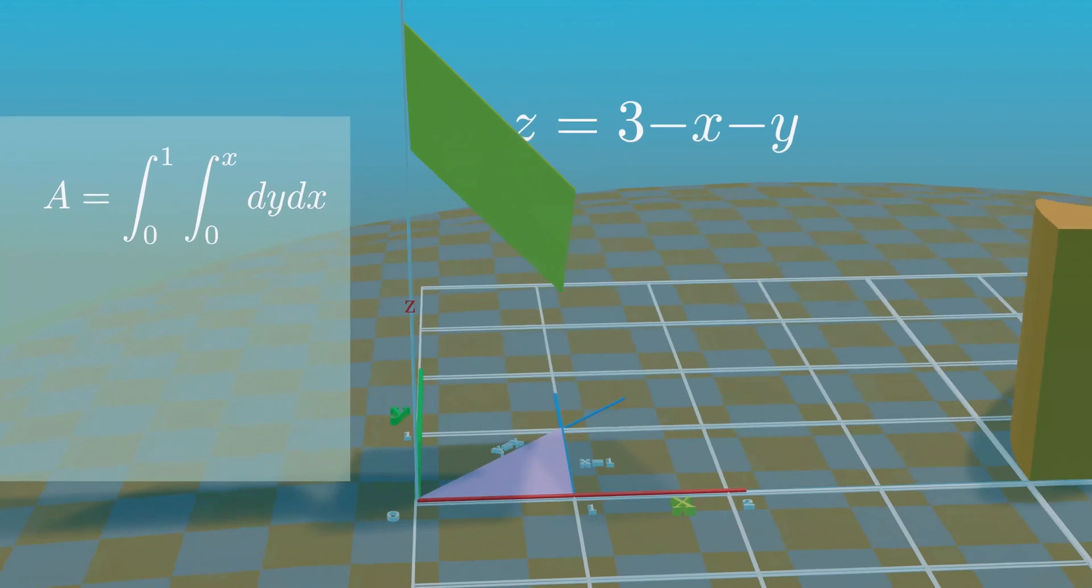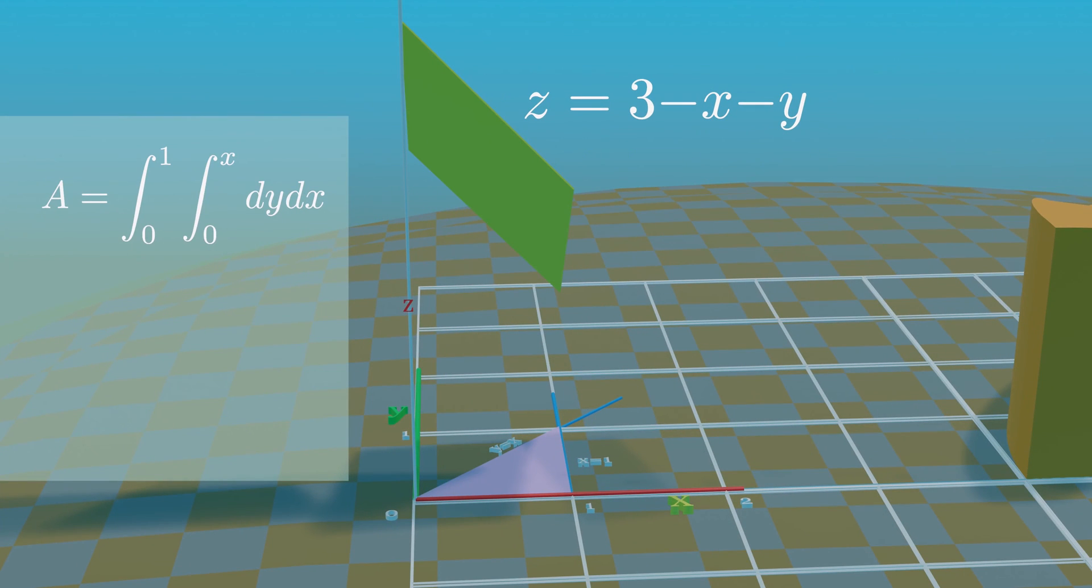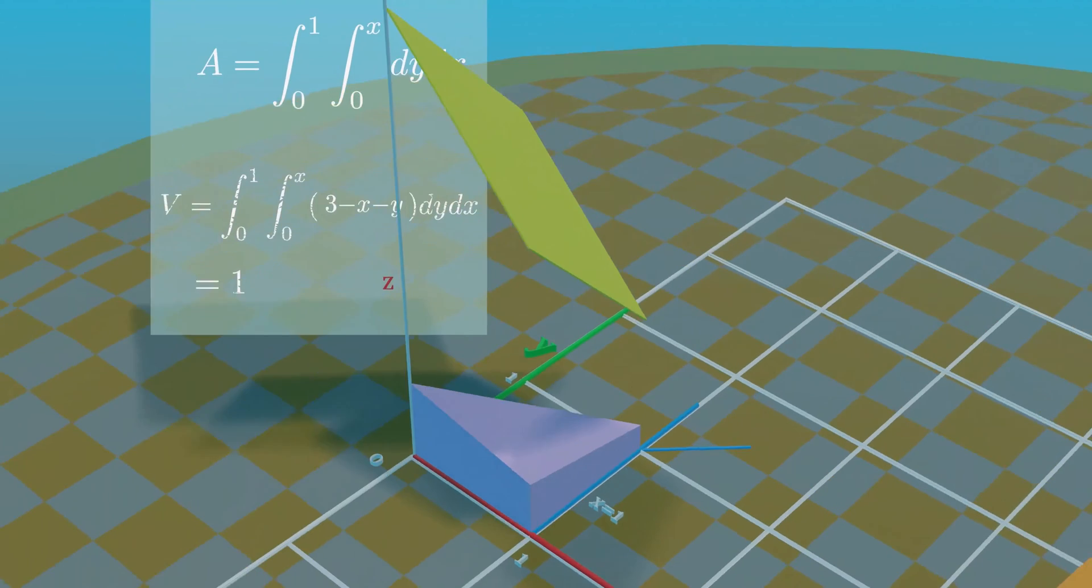Now if you bring this equation of plane in the double integral, integrate it over the range of x and y coordinates, then you get the full volume.